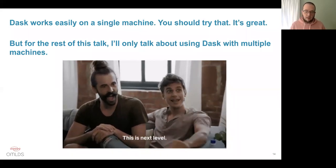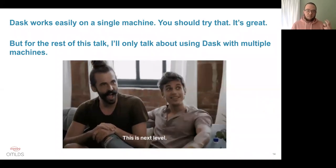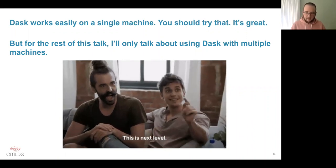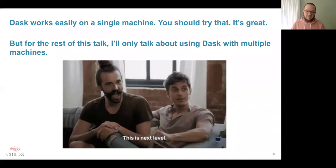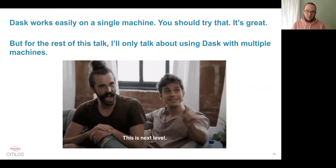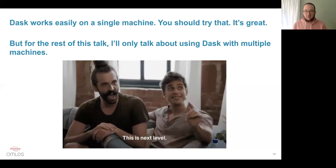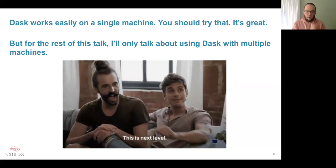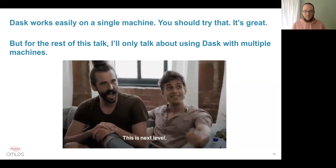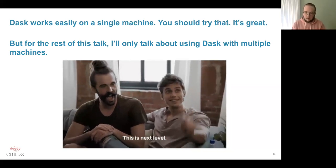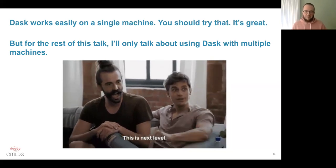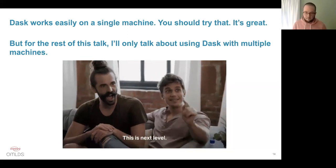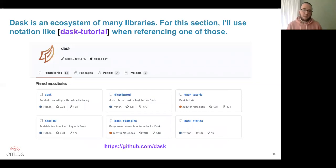I want to make a point before I start: Dask does work very well on a single machine, and there are reasons to prefer it even for single-machine use. For example, if you have a DataFrame too large to work with in memory, you can use Dask DataFrame to read it in, and Dask will transparently handle moving data back and forth between main memory and disk. But for the rest of this talk, I'm only going to talk about using Dask to orchestrate computations common in machine learning workflows on multiple machines. Also, Dask is not a single library — Dask is an ecosystem of many libraries. You can go to github.com/dask to see all of them.